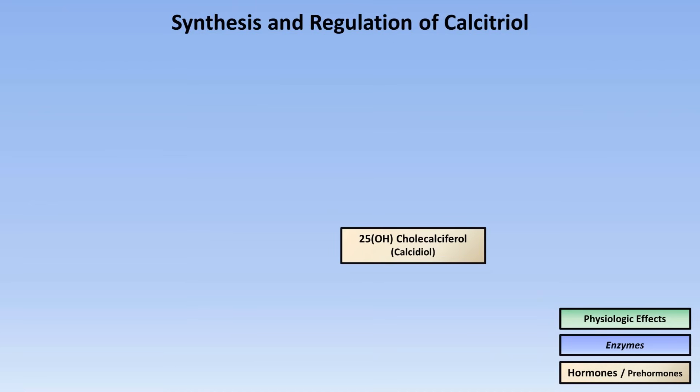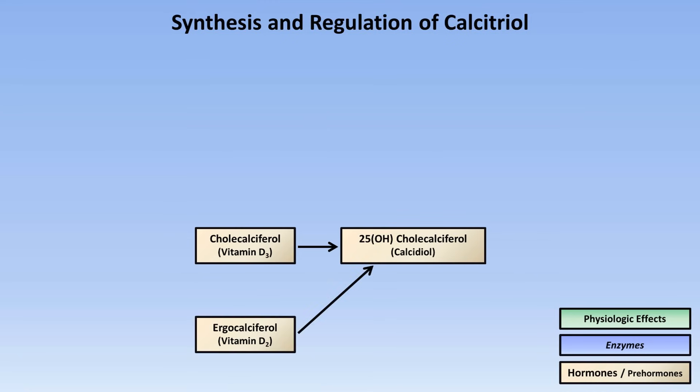The details of the synthesis and regulation of calcitriol are significantly more complex than that of PTH. The biggest source of this complexity stems from the fact that each compound and each enzyme has at least two, and sometimes three, different names which can be used interchangeably and which sound remarkably similar to one another. For this diagram, I'll use my standard notation in which physiologic effects will be in green boxes, enzymes in blue, and hormones and prehormones in tan. The prehormone 25-hydroxycholecalciferol, also known as calcidiol, can come from two sources: cholecalciferol, also known as vitamin D3, or ergocalciferol, also known as vitamin D2.